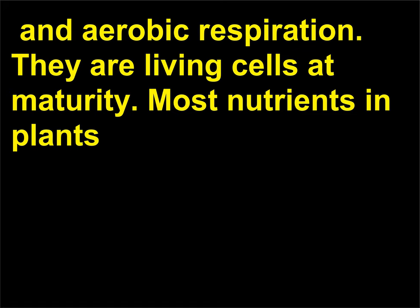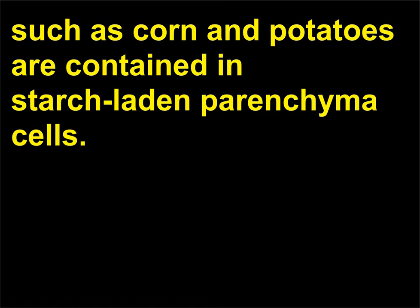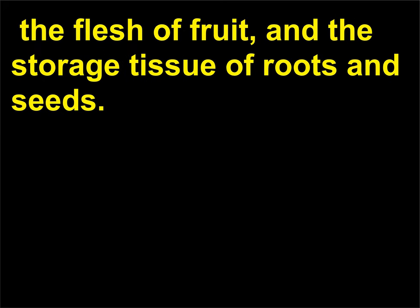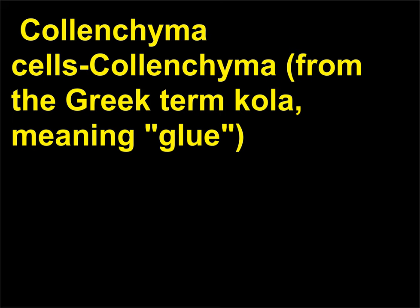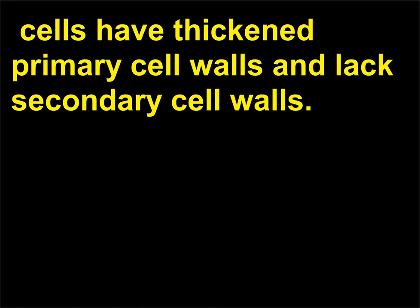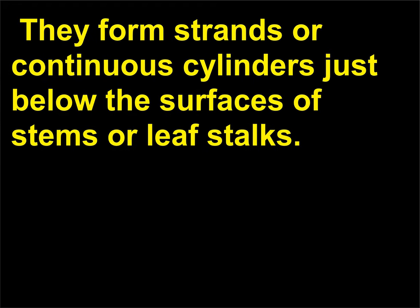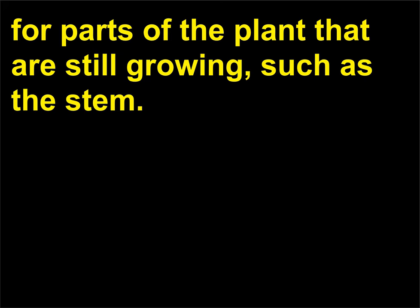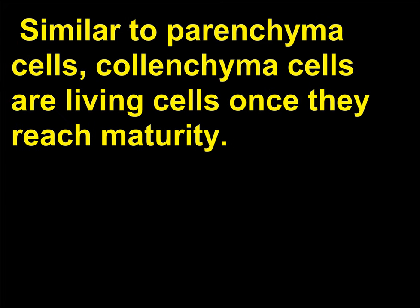Collenchyma cells — from the Greek 'kolla,' meaning glue — have thickened primary cell walls and lack secondary cell walls. They form strands or continuous cylinders just below the surfaces of stems or leaf stalks. The most common function of collenchyma cells is to provide support for parts of the plant that are still growing, such as the stem. Similar to parenchyma cells, collenchyma cells are living cells once they reach maturity.